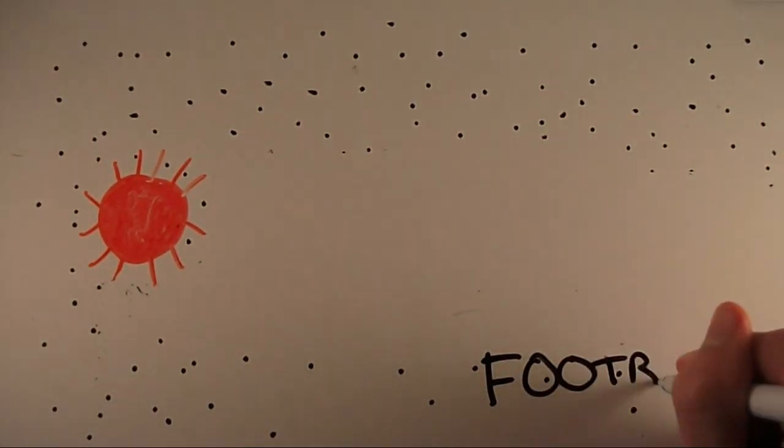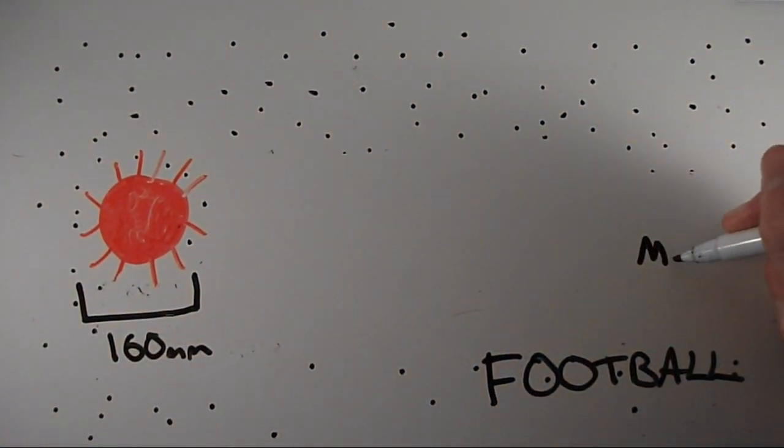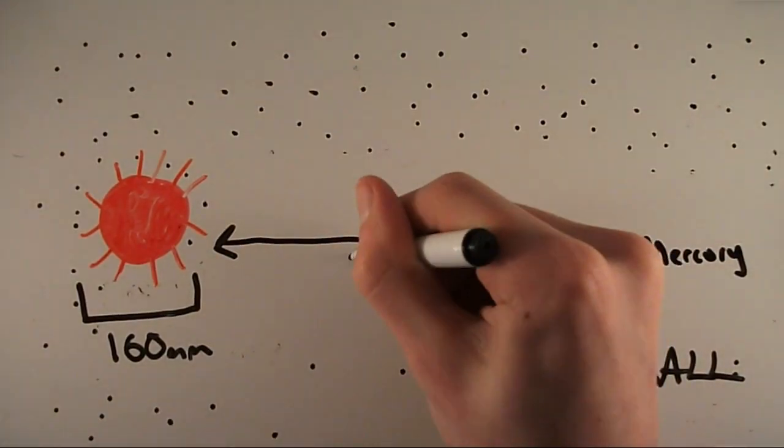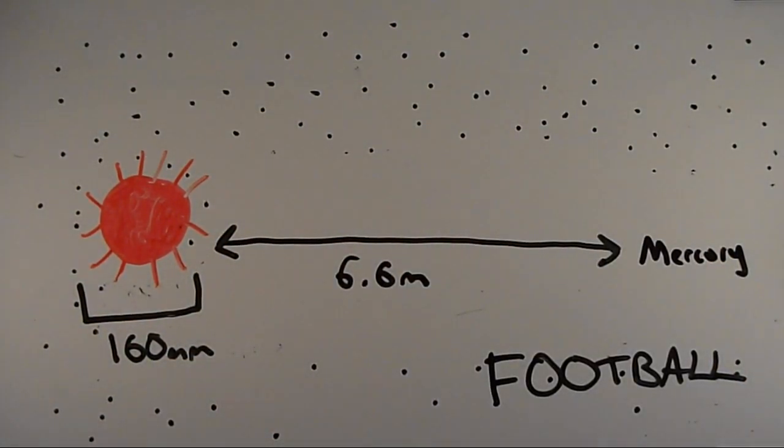Let's pretend the sun is as big as a football. A football is about 160 millimeters in diameter. The closest planet Mercury would be 6.6 meters away from the 16 centimeter diameter sun.